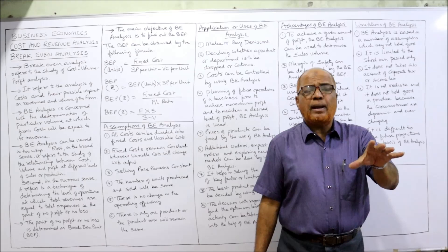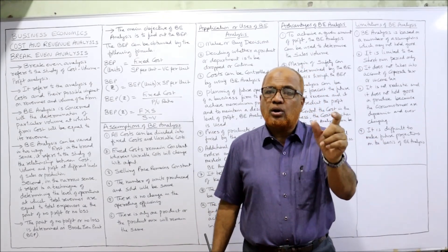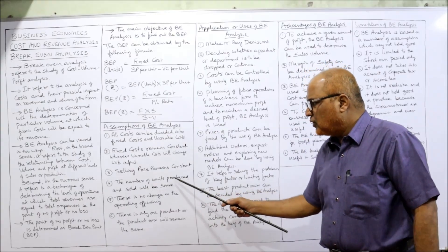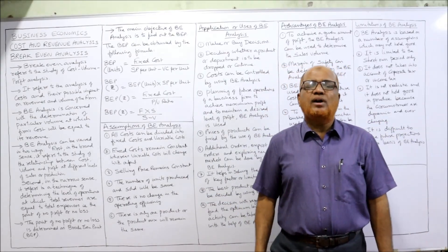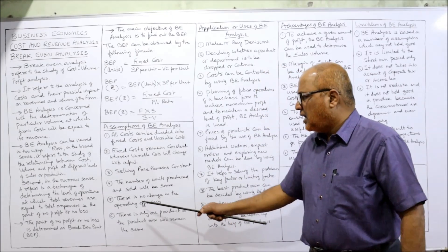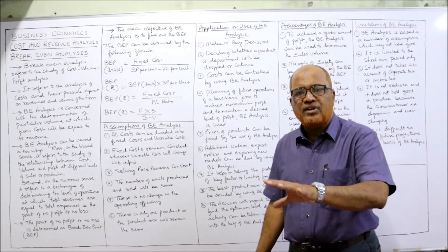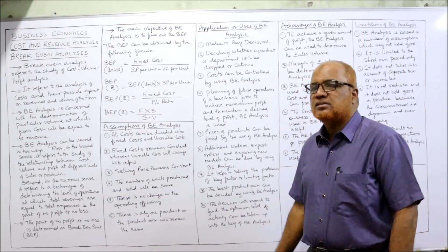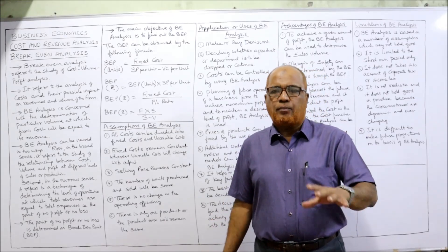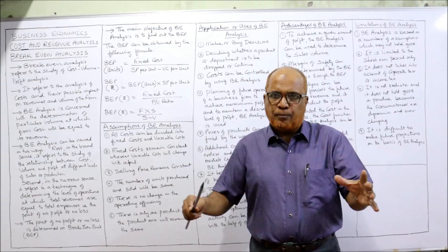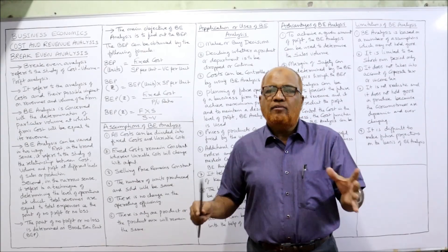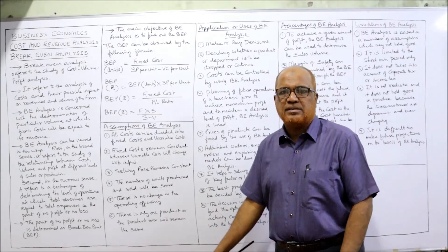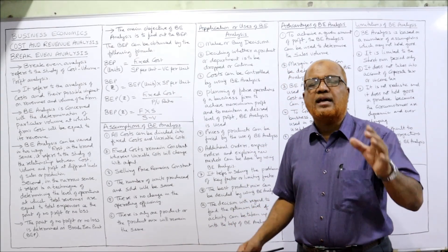Third assumption: selling price remains constant. When we apply break-even analysis, we assume selling price will not change; if it changes, break-even analysis will not give true results. Fourth assumption: the number of units produced will be the same as units sold, and there is no change in operating efficiency. Fifth and last assumption: there is always one product, or the product mix will remain the same — we cannot change the product mix.